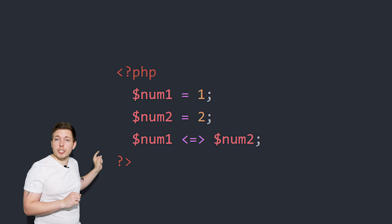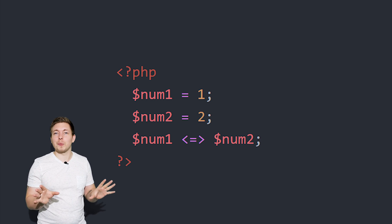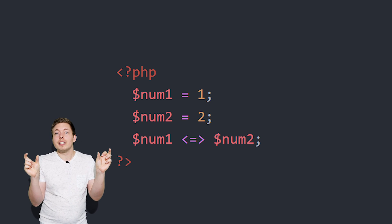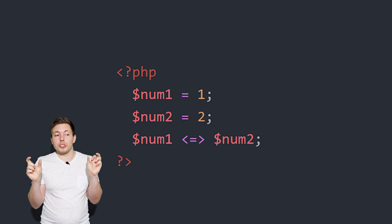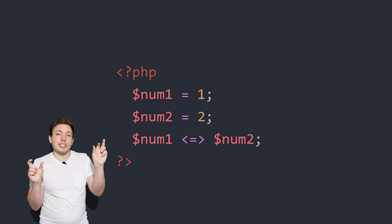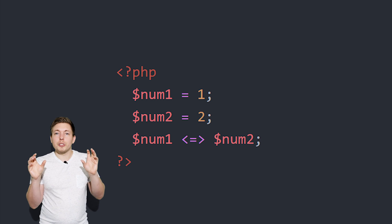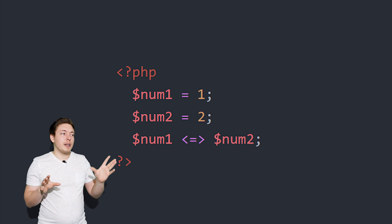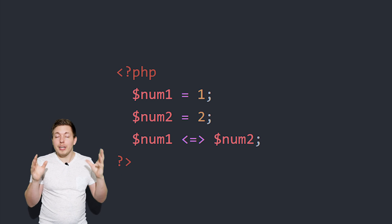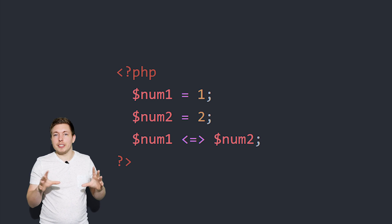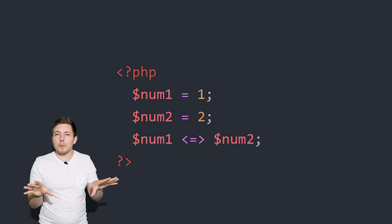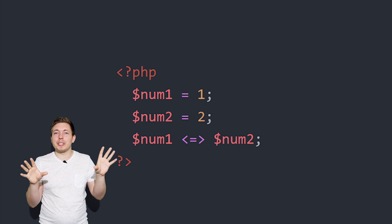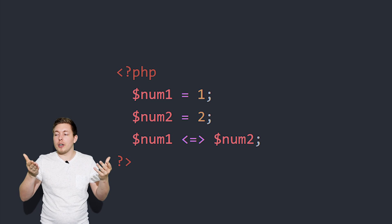Then there's a special one called the spaceship operator, which can be a little difficult to understand. If the number on the left is greater than the one on the right, it returns 1. If the two numbers are equal, it returns 0. If the one on the right is greater than the one on the left, it returns -1. So we can use this to check three different types of outcomes when comparing two numbers. If you don't understand why we'd need 1, -1, or 0 right now, it has to do with comparing numbers in different PHP statements — we'll revisit this in the future.